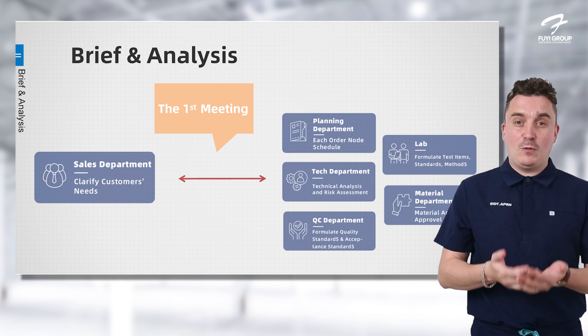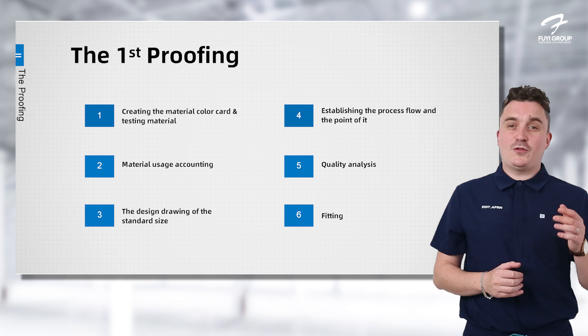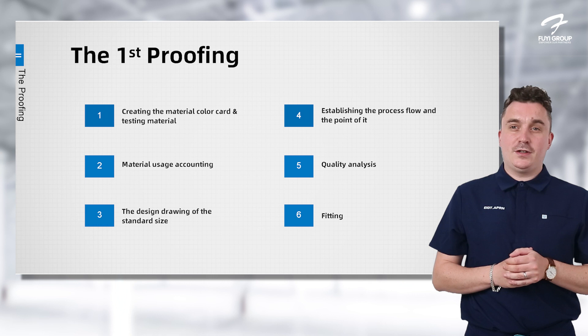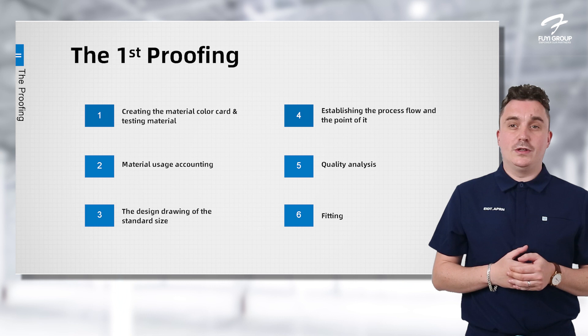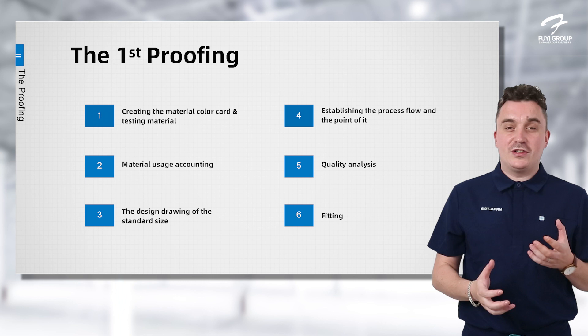Now we move on to our first proofing, which takes place after all of your needs and requirements have been met. The first thing we'll do is create the material colour card — if you want a specific colour or type of material, we'll make that colour or material card for you to confirm it's the right one. The second step is material usage accounting, where we look at all the different materials we need and how to use them best for you.